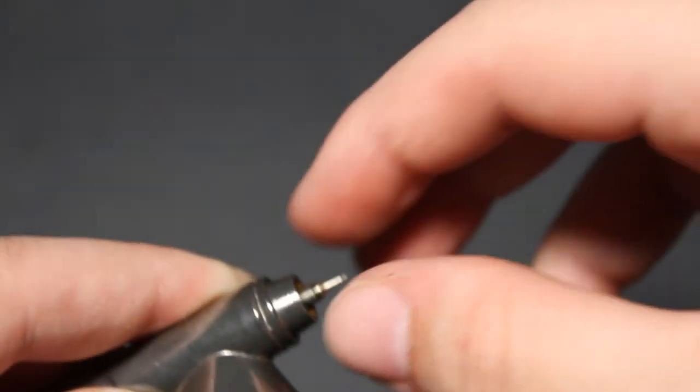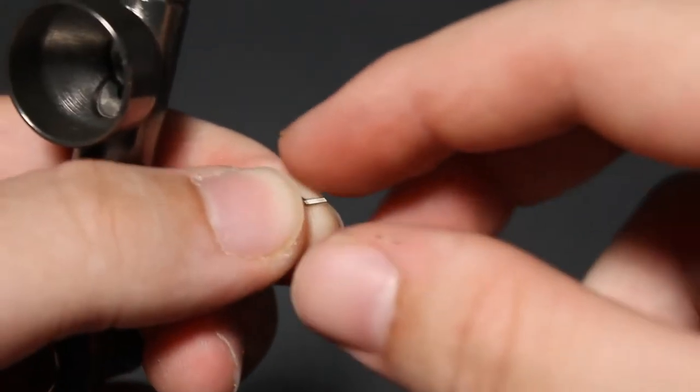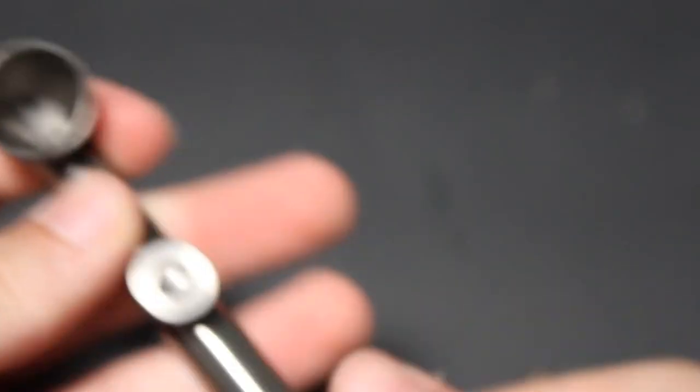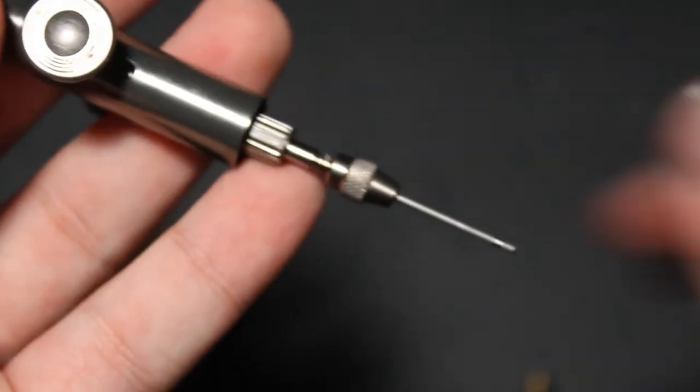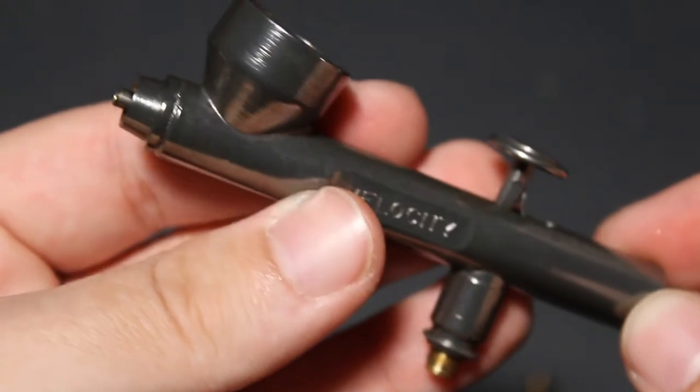Then we get this small little thing that you really need to watch because you'll lose it. Then we're going to unscrew the back portion to get the needle undone. Going to unscrew this tightener thing. Then, yeah, there's your disassembled airbrush.